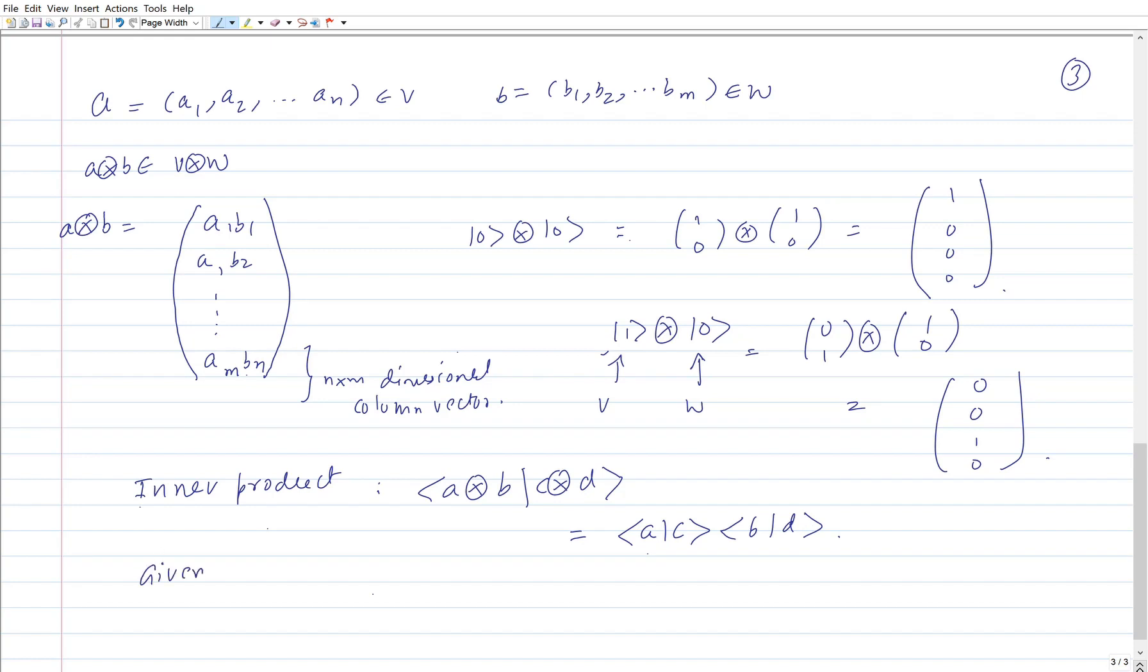Now if I have given two linear operators, A is an operator in the linear vector space V and B is an operator in the linear vector space W. Their tensor product A tensor B is going to be an operator in V tensor W. And as we know, the set of operators form another vector space.